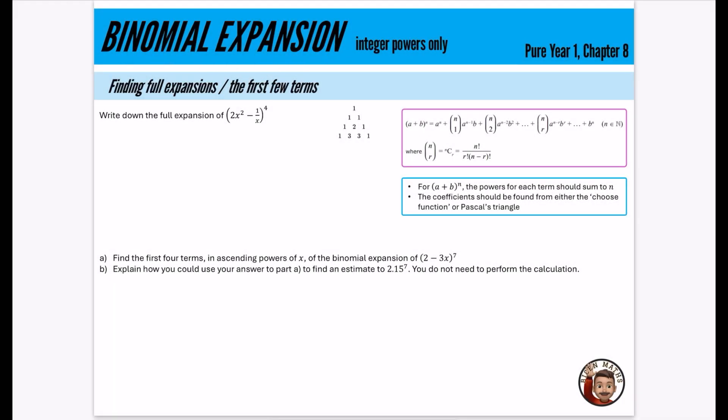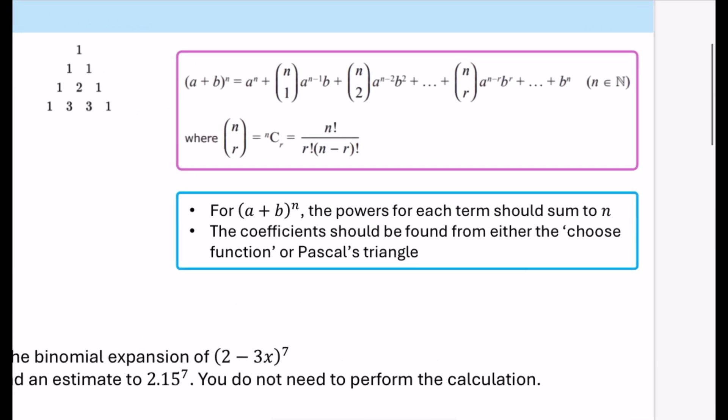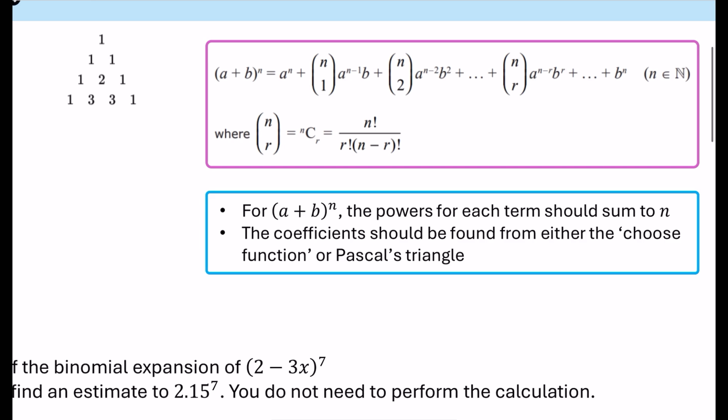We are looking at binomial expansion with integer powers only. This is the AS or Year 1 content. We return to binomial expansion in Year 2 where we do all kinds of powers. So this is pure Year 1, chapter eight. We're going to do some questions finding full expansions or just the first few terms. I'm not teaching this from scratch — it's more to summarize a playlist, or for quick revision before a test, or to check you've understood how it could come up in an exam context.